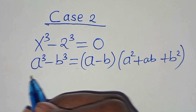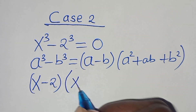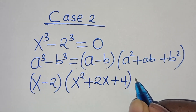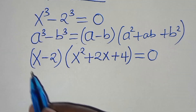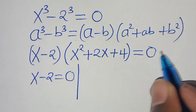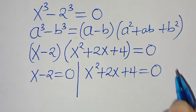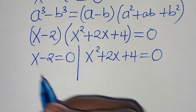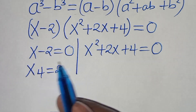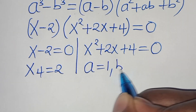Applying this identity, we have x minus 2 times x squared plus 2x plus 4 equals 0. So we have two parts: the first part is x minus 2 equals 0, and the second part is x squared plus 2x plus 4 equals 0. From the first part, x₄ equals 2, which is a real solution.